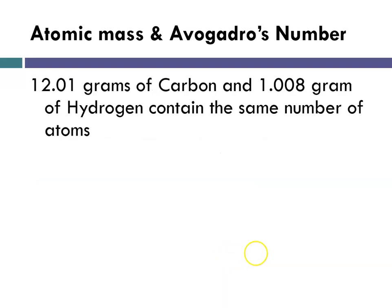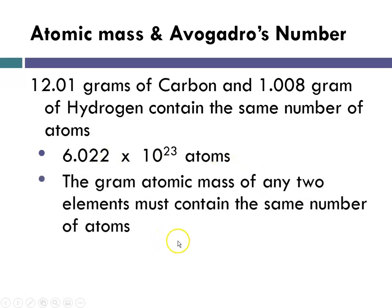So for instance, carbon would be 12.01 and hydrogen would be 1.008. And when I have those masses of those two elements, it means that I have the same number of atoms, because these are elements I'm talking about. And so 12.01 grams of carbon and 1.008 grams of hydrogen both contain 6.022 times 10 to the 23rd atoms. The gram atomic mass of any two elements must contain the same number of atoms.